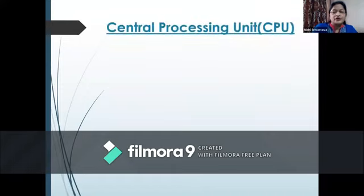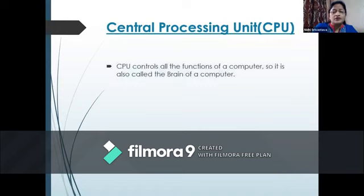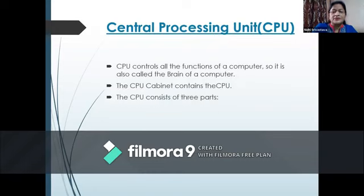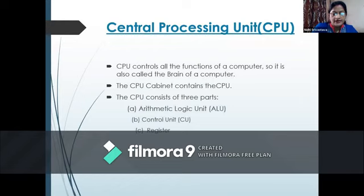Central Processing Unit — CPU. CPU controls all the functions of a computer, so it is also called the brain of a computer. The CPU cabinet contains the CPU. The CPU consists of three parts: number one, Arithmetic Logical Unit (ALU); number two, Control Unit (CU); and number three, Register.